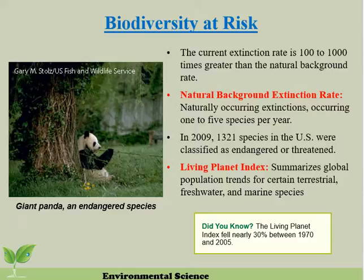How is everybody doing? I hope everything's going good. What we're going to talk about today in this video is biodiversity at risk. We're going to be discussing the six primary ways in which biodiversity is lost and also try to put the connection together between biodiversity loss and extinction.